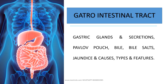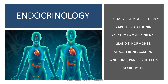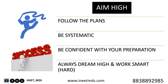The last topic is gastrointestinal tract. Under gastrointestinal tract from physiology it is very, very little — only the different types of gastric glands and what are the secretions from each cell present in the gastric gland, what is Pavlov's pouch, bile composition, what is a bile salt, jaundice and the causes of jaundice, and types and features of jaundice. Try to read a little bit of jaundice in physiology and cover the remaining portion when studying under general medicine. Make sure hematology, gastrointestinal tract and endocrinology are studied a little during physiology preparation, and the remaining you can take over when studying for general medicine.